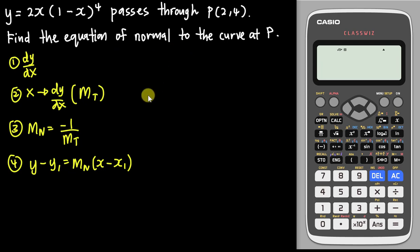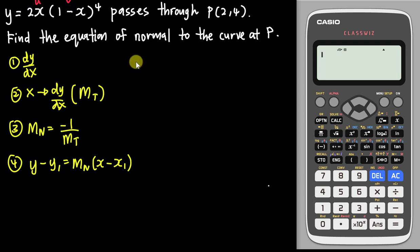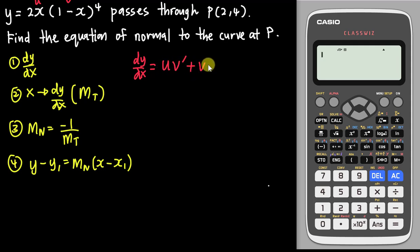Right now we want to do dy/dx. Looking at this equation, you need to use the product rule with u and v. The product rule formula for dy/dx is: u differentiate v, plus v differentiate u.